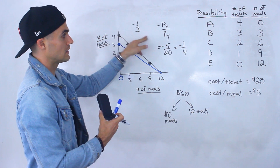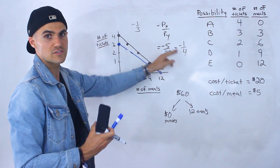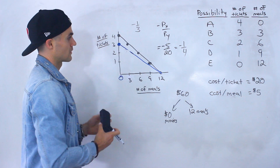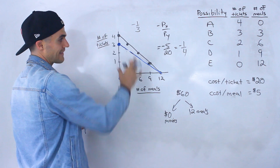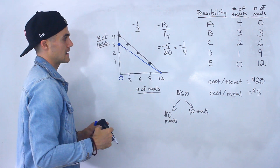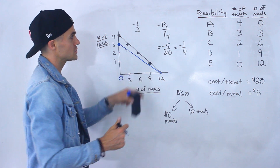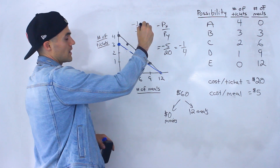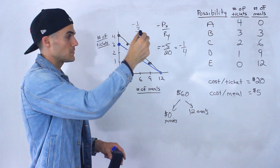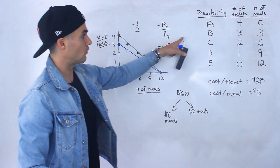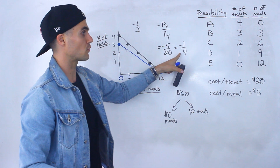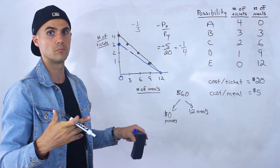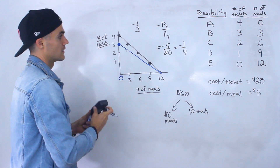Negative one-third is about negative 0.33; negative one-fourth is negative 0.25. The absolute value 0.25 is less than 0.33, so that line is less steep. The opportunity cost changes as well. Instead of sacrificing three meals for one movie ticket, now you have to sacrifice four meals for one movie ticket because the cost per ticket went up — you have to give up more meals in order to get it.